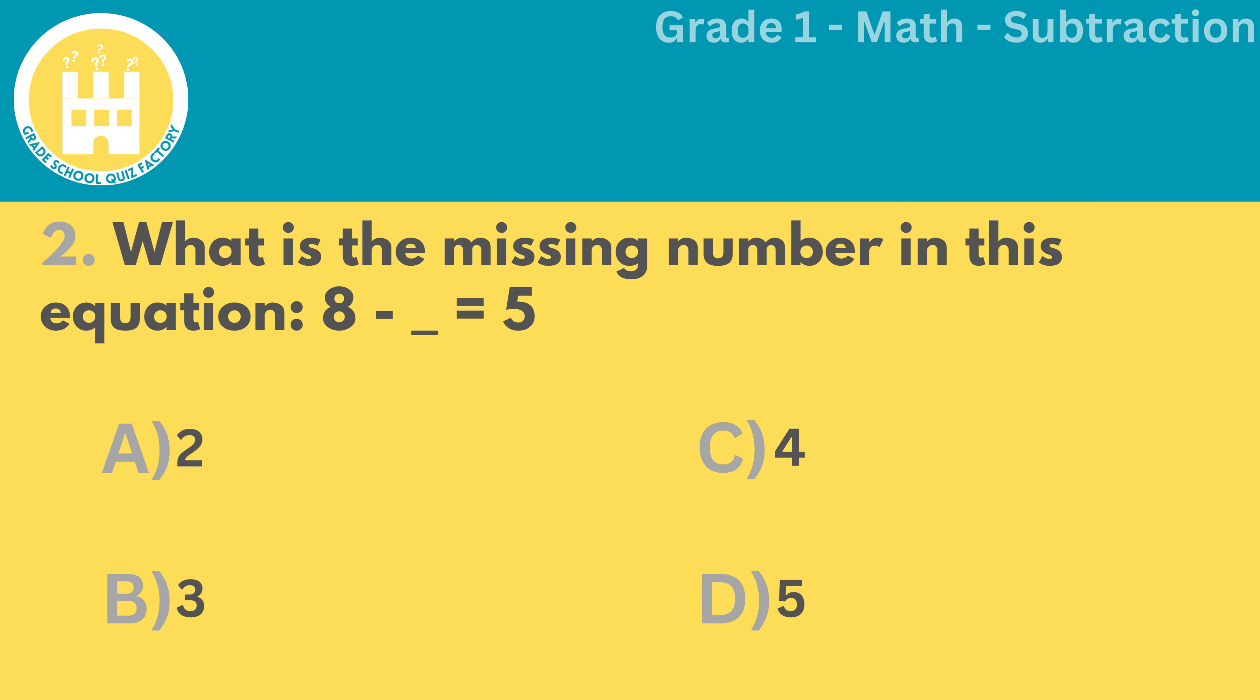Number 2. What is the missing number in this equation? 8 minus blank equals 5.